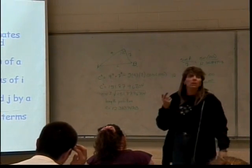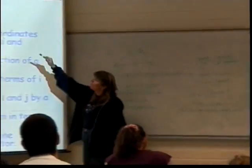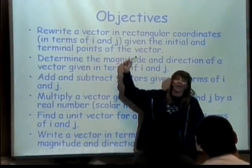So, what we need to be able to do in order to make it easier to deal with them is to put a vector in rectangular coordinates, in terms of these things that we refer to as i and j for vectors.